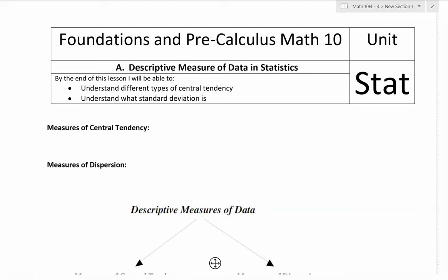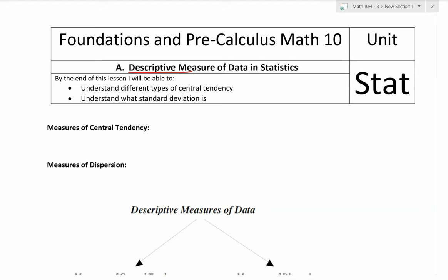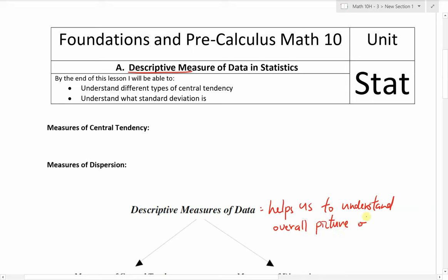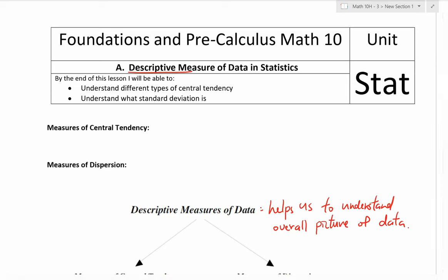We are going to start with descriptive measures of data in stats. Descriptive measure means it is some measurement that helps us understand the overall picture of data. Many of you would ask me what's the average for the test — the test scores would be the population, everyone's test score. When you ask me for the mean or the average, that is a descriptive measure of data.